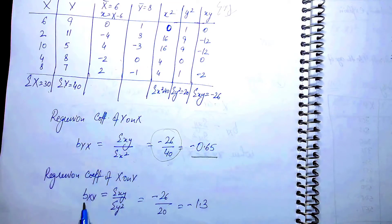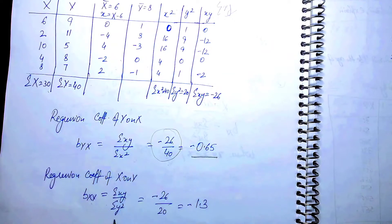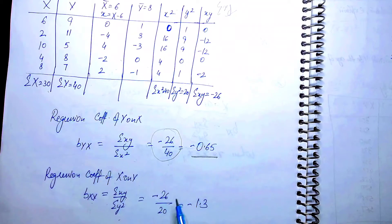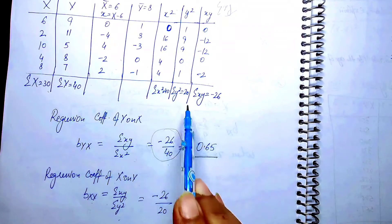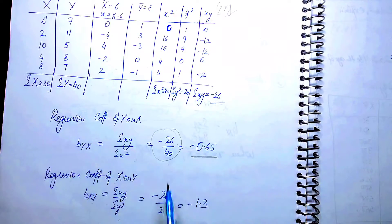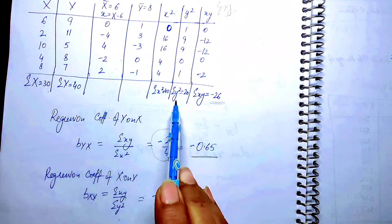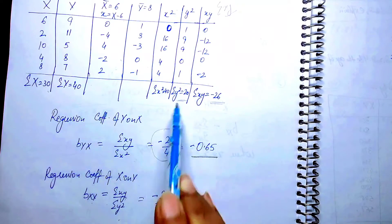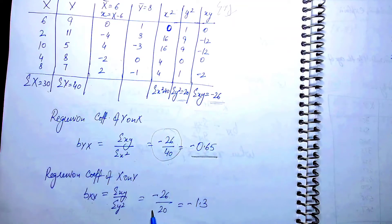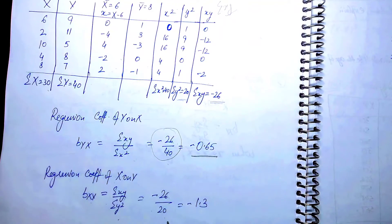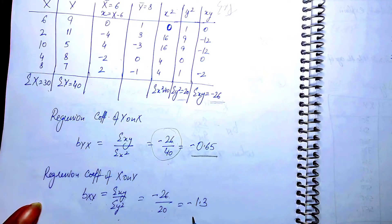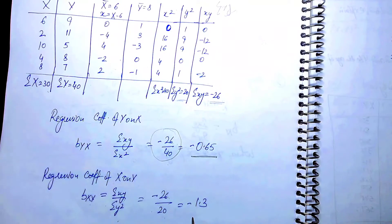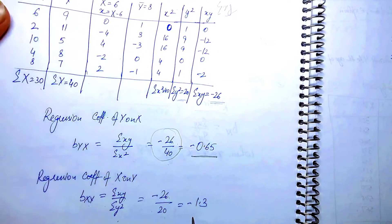For x on y, b_xy = summation(xy) divided by summation(y²). The value of summation(xy) is the same: -26. But summation(y²) is 20. So b_xy = -26 divided by 20 = -1.3.